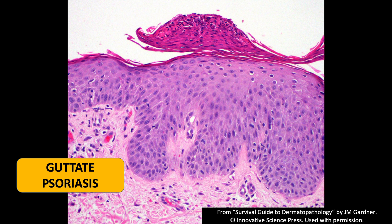Here's an example of guttate psoriasis, which has little tiny round patches and plaques clinically rather than the larger plaques most of you have probably seen. Guttate looks different, and accordingly, microscopically it doesn't usually have that classic elongated rete ridge acanthosis — it can be a lot more subtle. But you tend to see little mounds of parakeratosis with neutrophils, and that's what guttate psoriasis looks like — not the classic plaque psoriasis appearance.